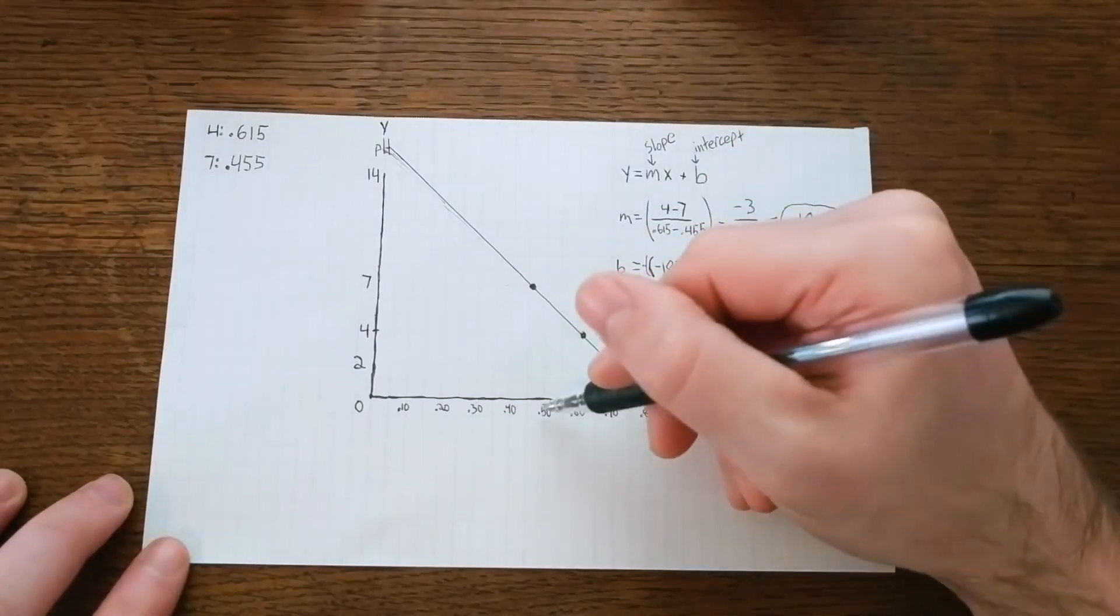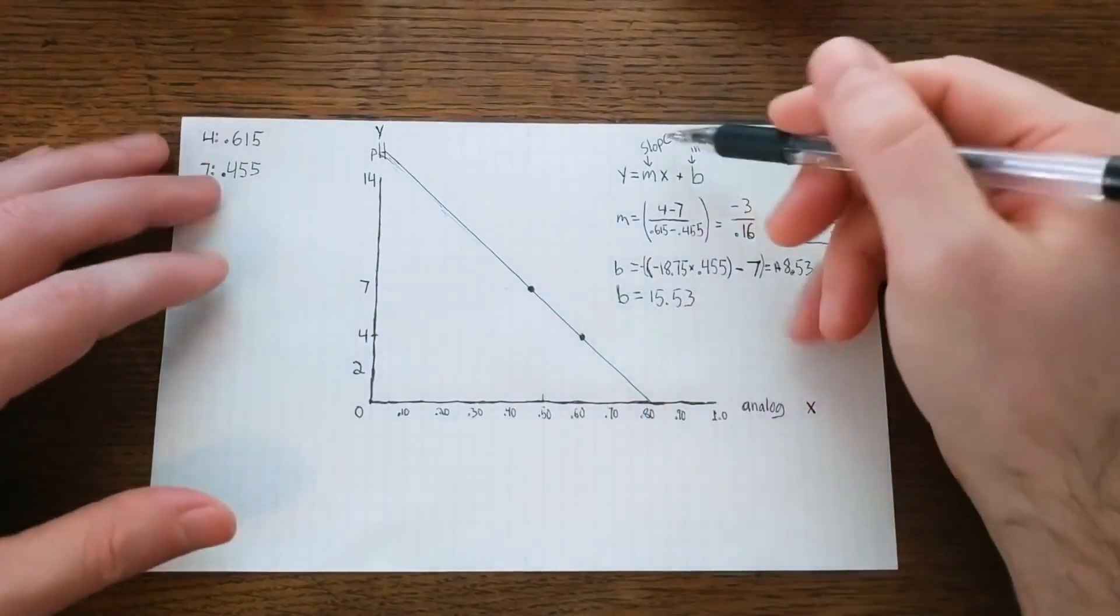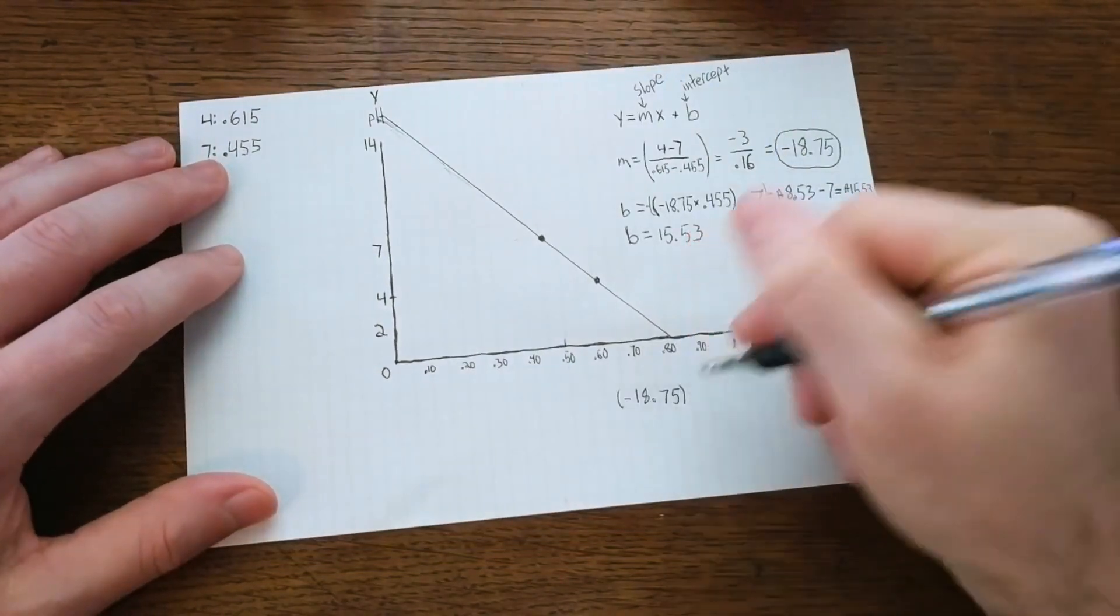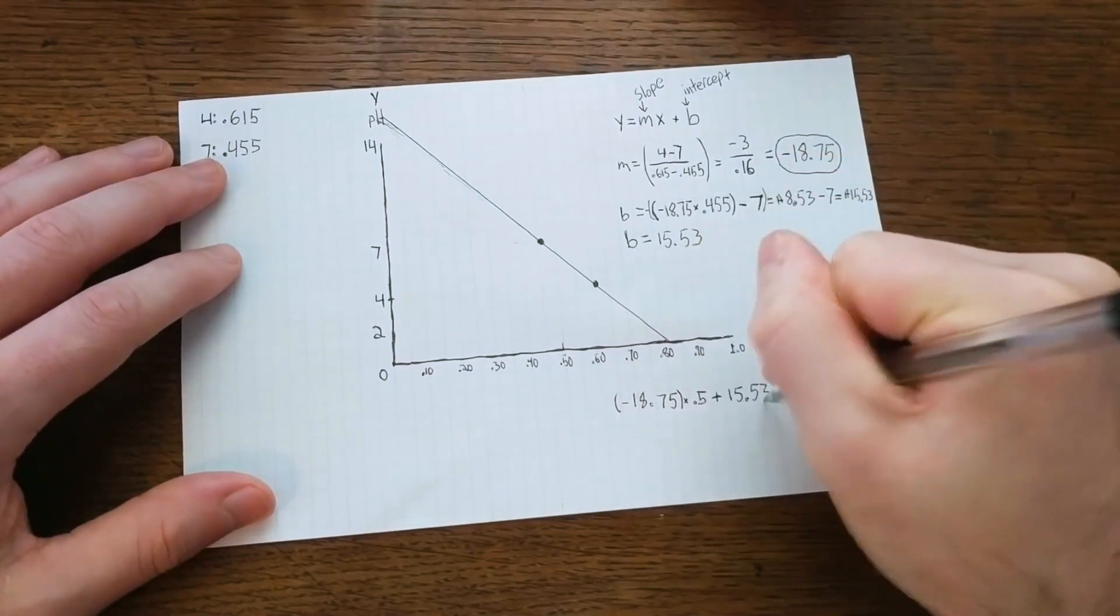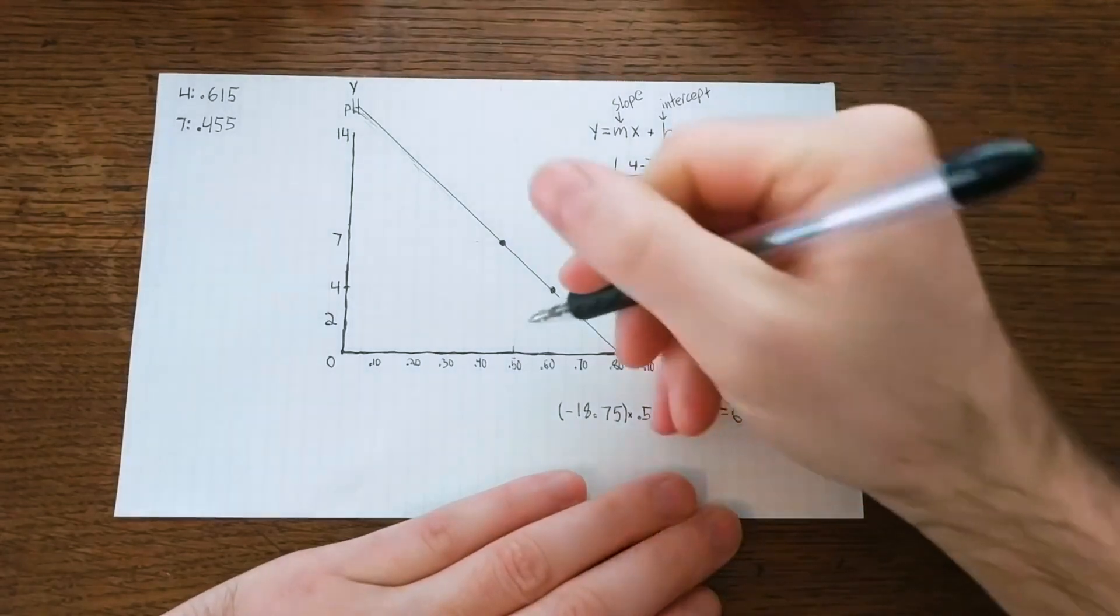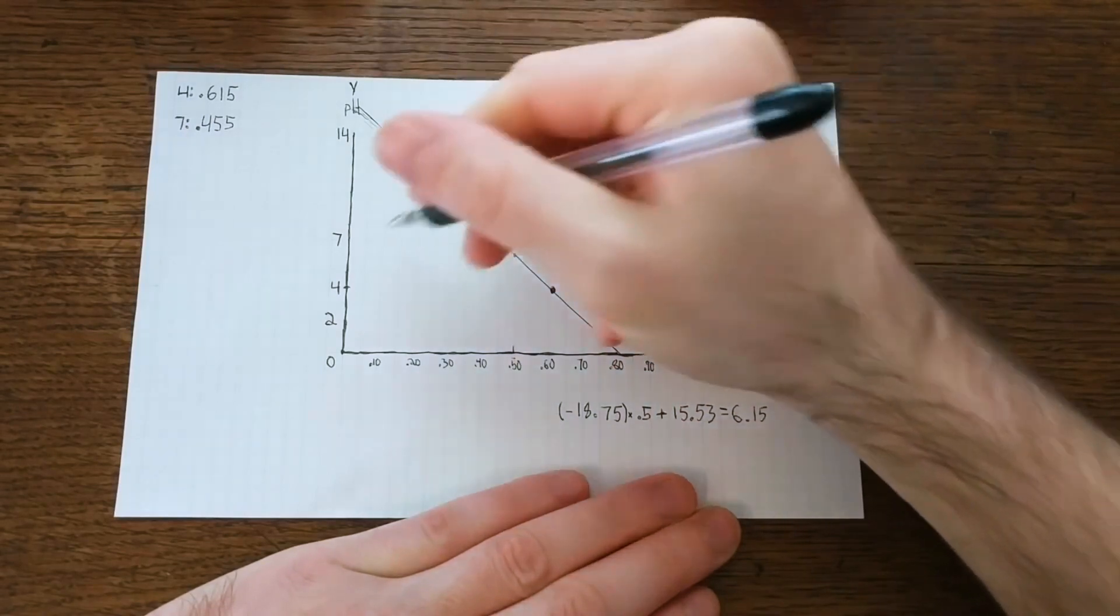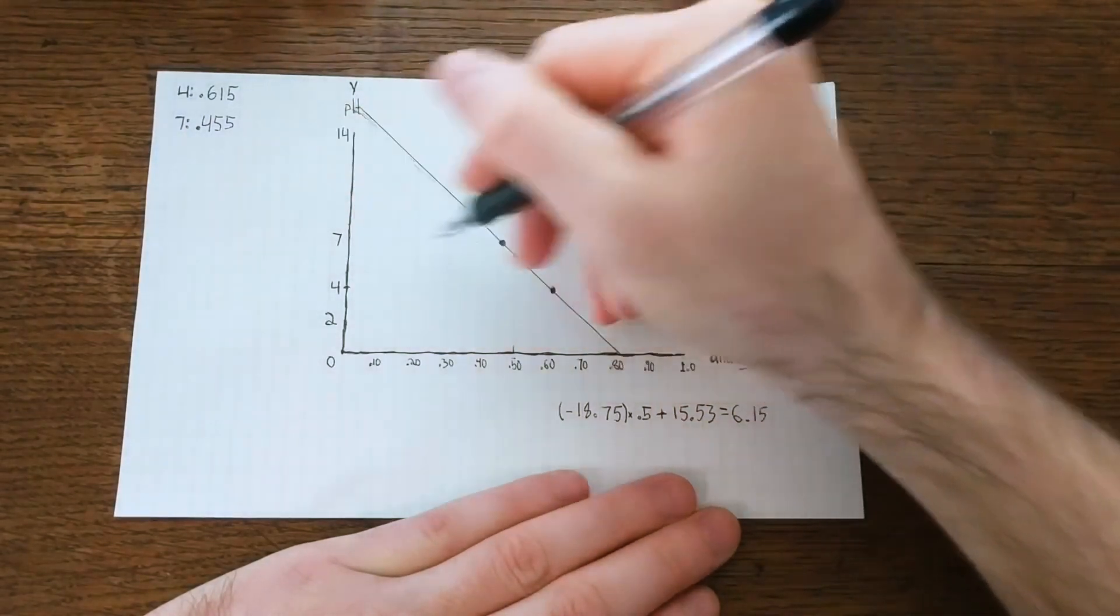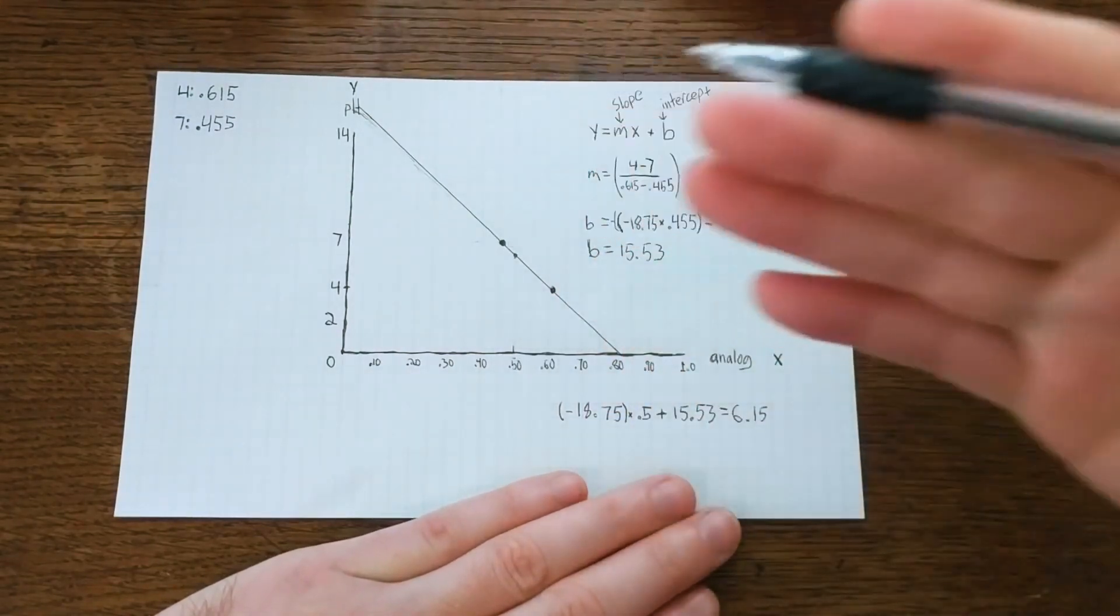Now if we have an unknown point, let's say we get the analog reading 0.5, we can calculate y using the slope-intercept formula. So that'll be our slope times our x value plus our intercept. And if you do the math, that ends up being about 6.15, which would be our pH. And if you do a visual confirmation, it is on our original line about where 6.15 would be. Cool! Now we have a function that we can turn into code.